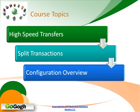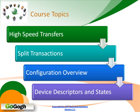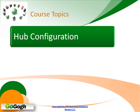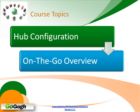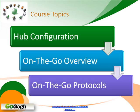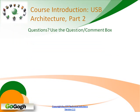We'll look at a configuration overview and how configuration is handled in USB. We also will go over device descriptors and we'll look at device states — how those are used in the configuration and communication in USB. Hubs have to be configured just like devices do, and we'll look at hub configuration. We'll cover the on-the-go specification, breaking it into two sections: the big picture and then the details of on-the-go. If you have any questions, please use the question and comment box. Let's go ahead and get started in USB Part 2.